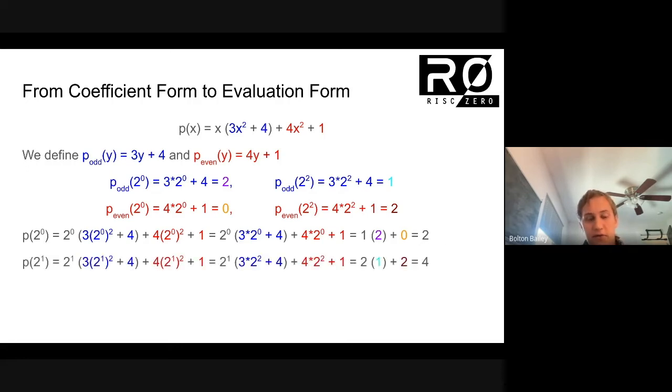Now let's do it for two to the one. Similarly, we have two to the one squared and two to the one squared here. And that becomes two squared and two squared. And we see that those two values are the evaluations of p odd and p even on two squared that we computed here. So we have the cyan one here and the brown two here. And if we substitute those in, we can evaluate p on two to the one, which is four.